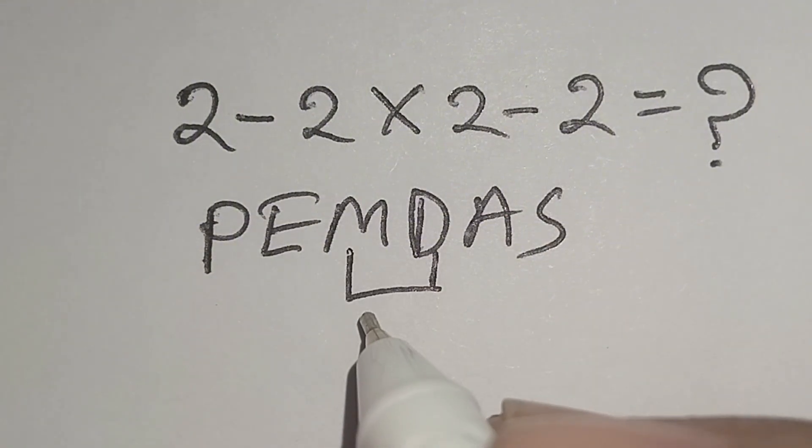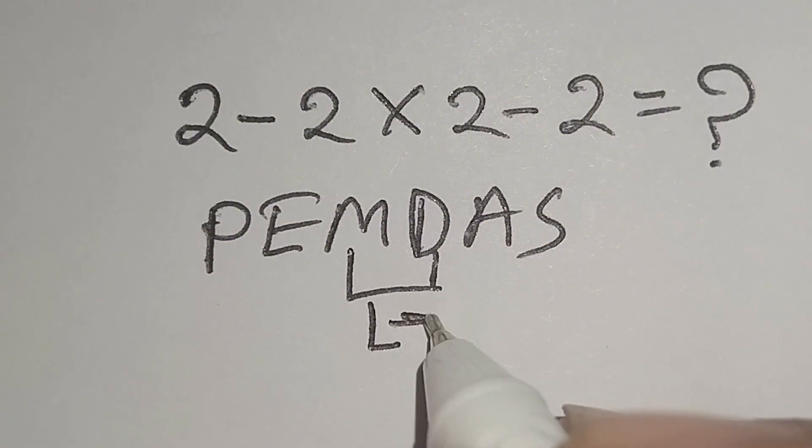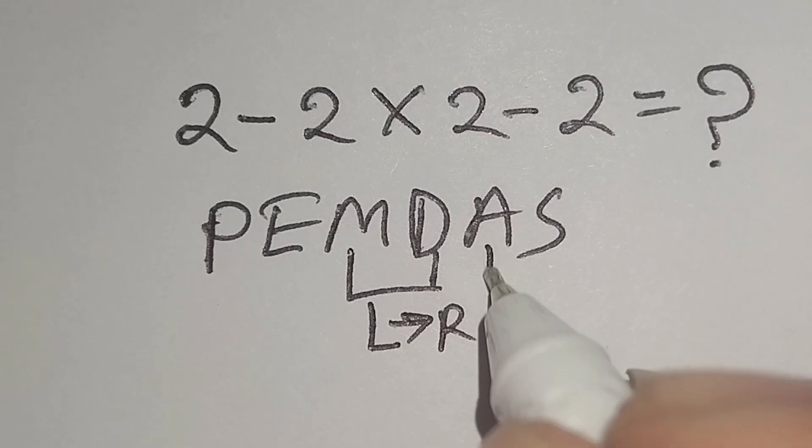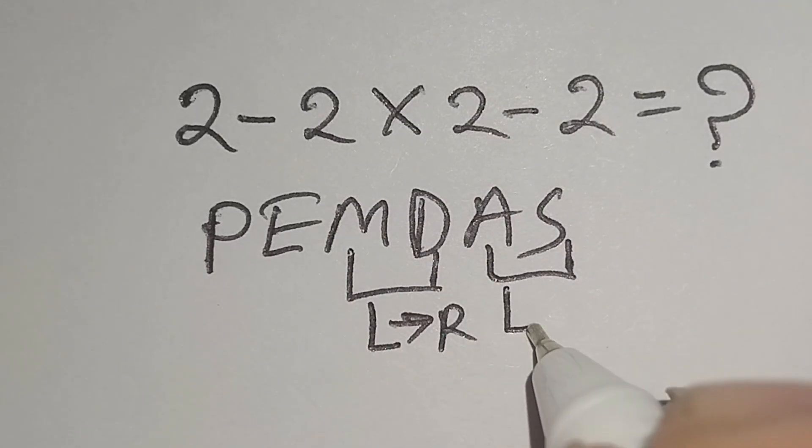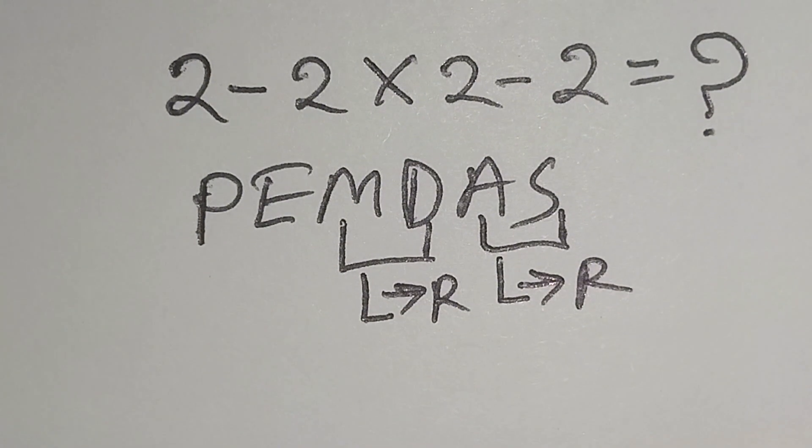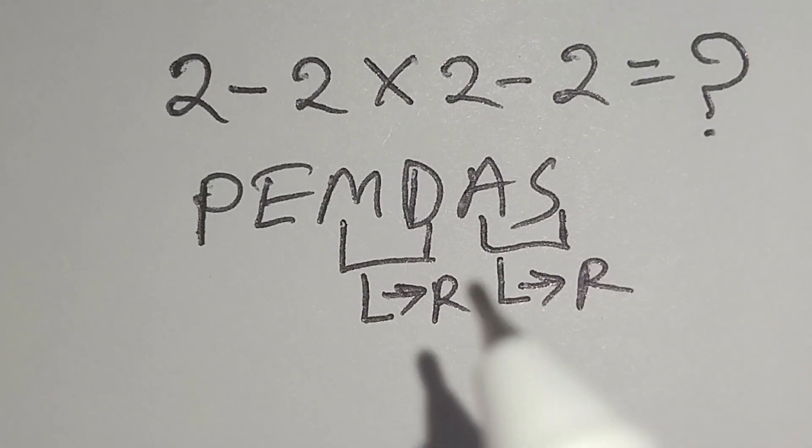multiplication and division have same priority, for this we have to work left to right. And addition and subtraction have same priority, for this we have to work left to right also. Therefore, at first we have to work with